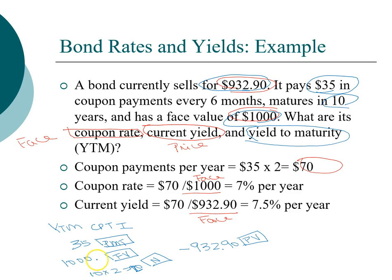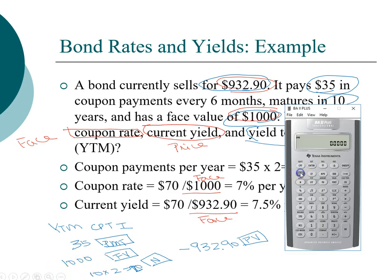As I said, we need a financial calculator to solve this problem. First, let's clear our financial register, so clear TVM. We have $35 as our coupon payment, so that's payment. $1,000 is our future value. 20 times, so 20 is our maturity. Then we enter this as an outflow. So we first type in $932.90, change the sign to negative, and that becomes our present value.